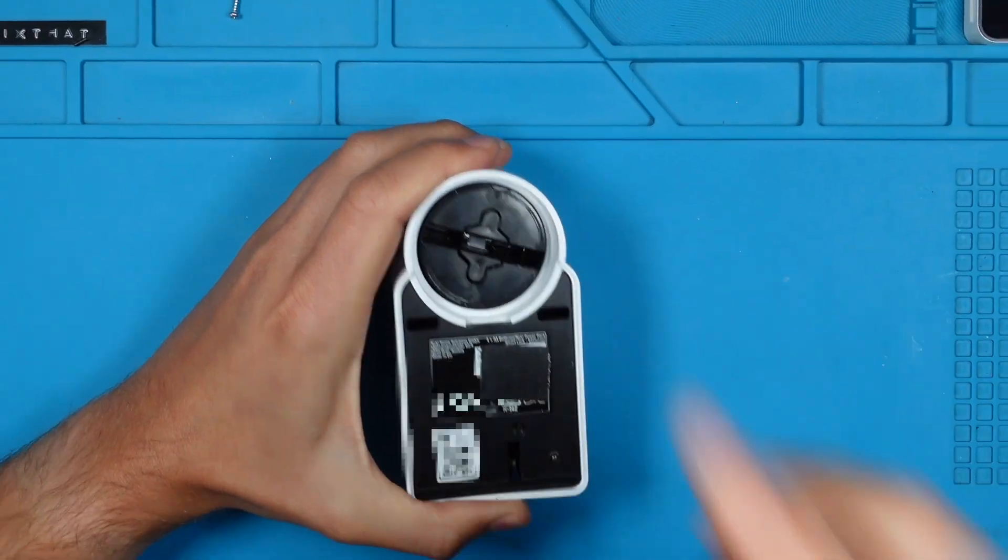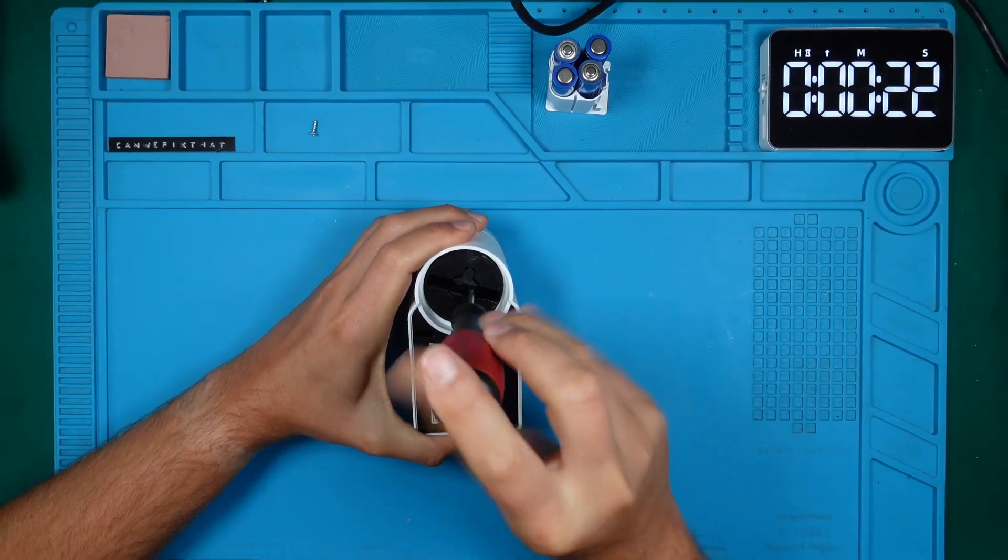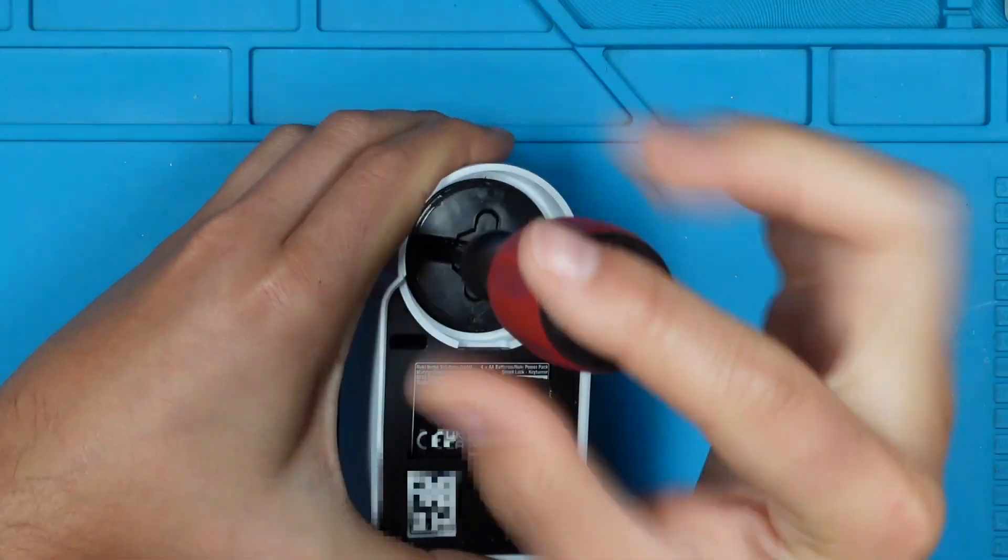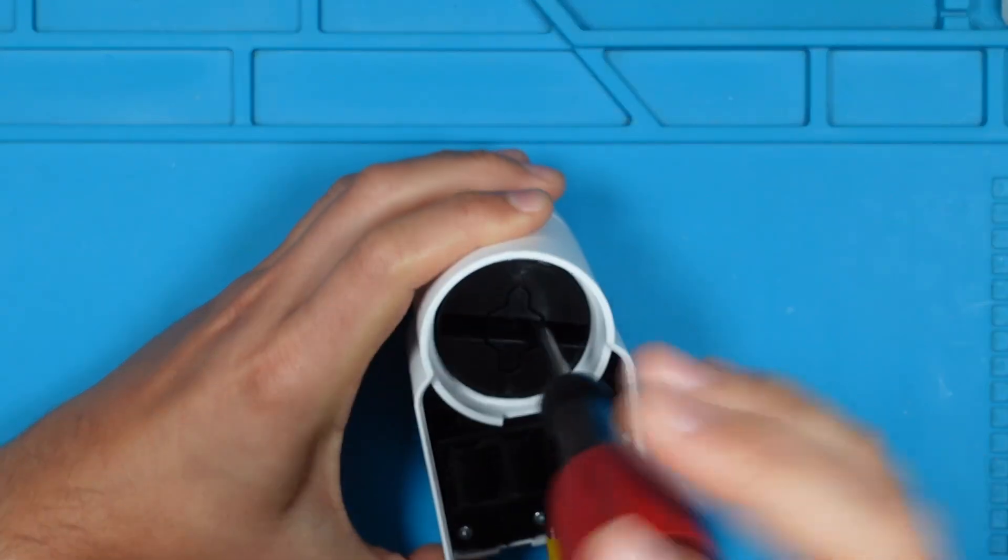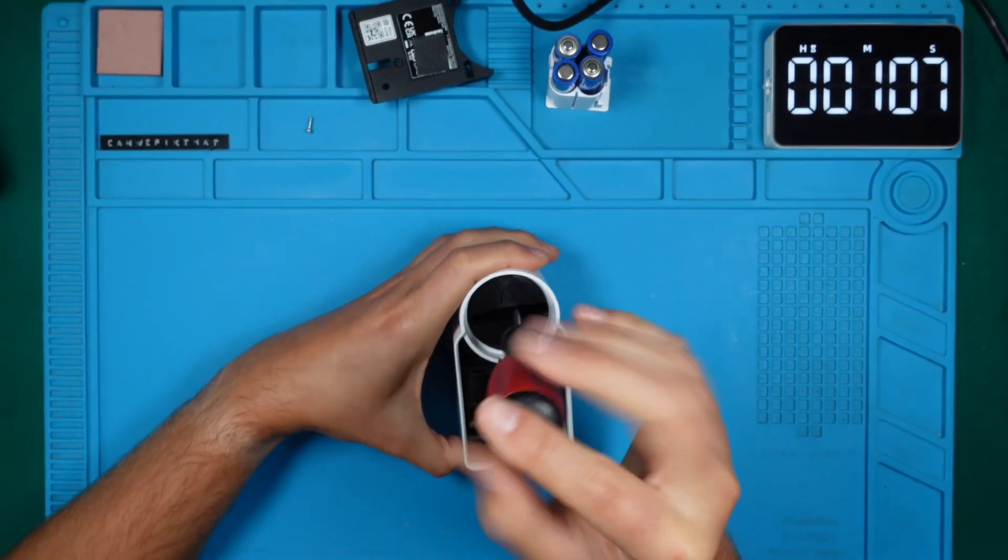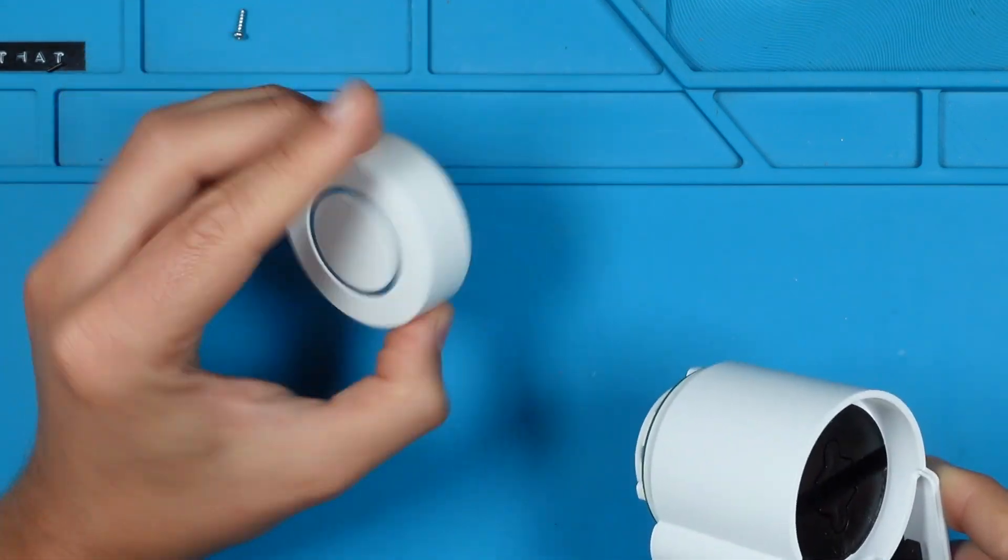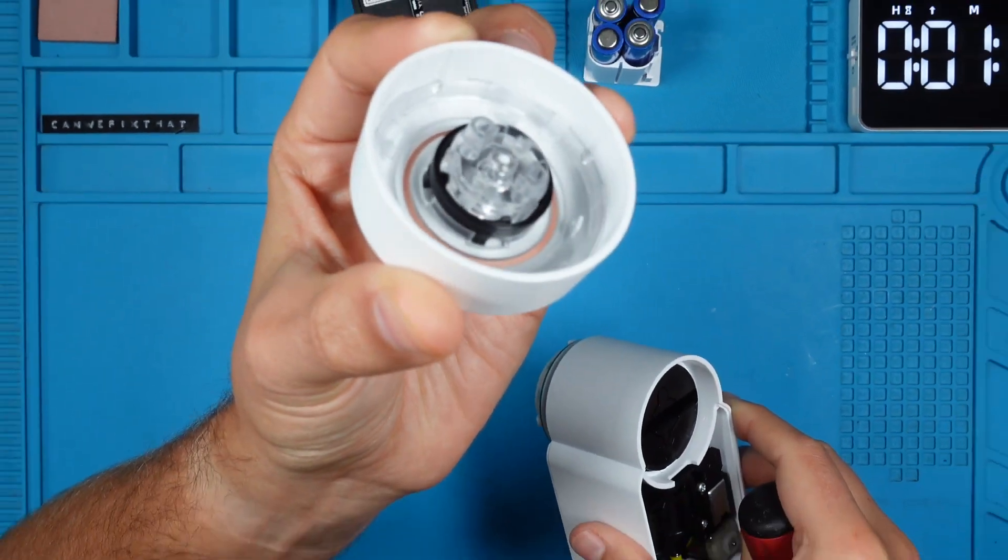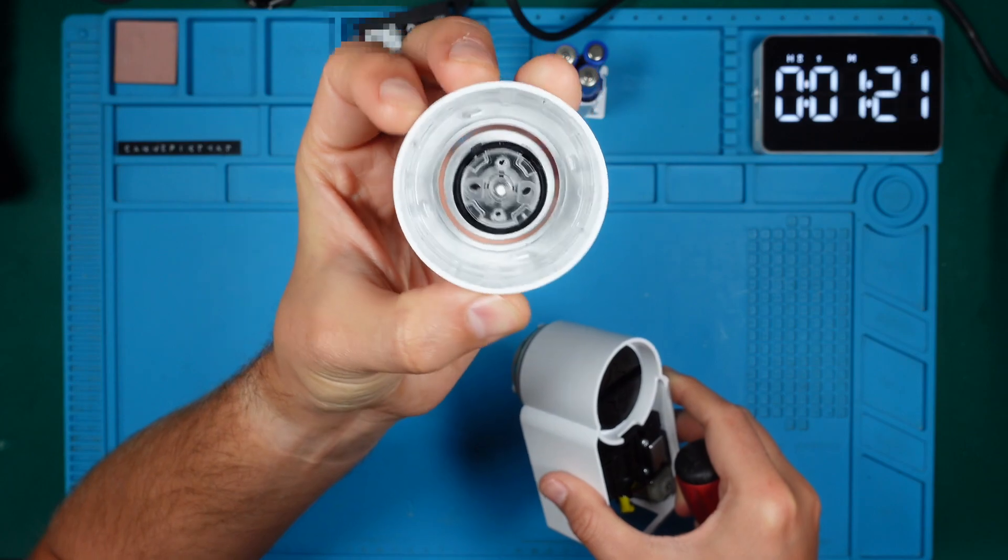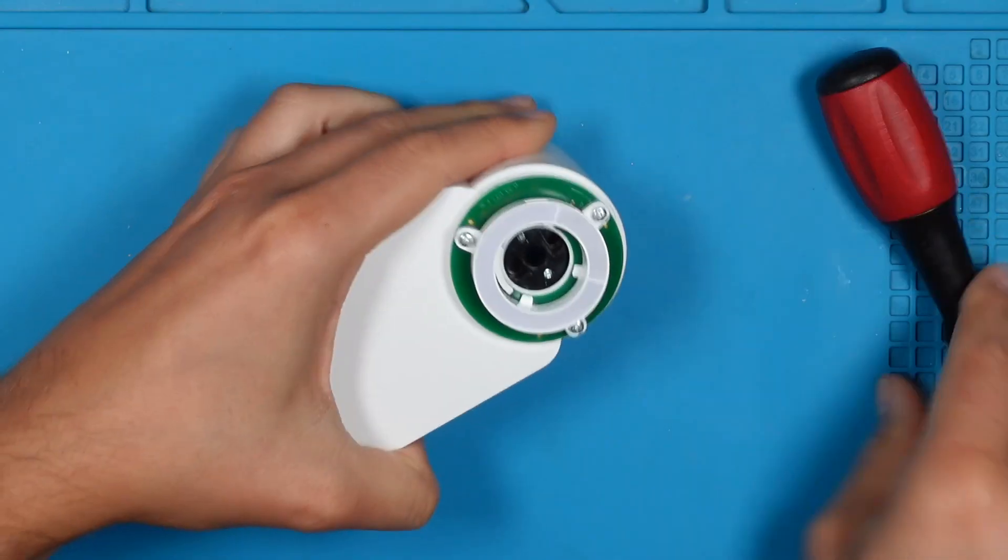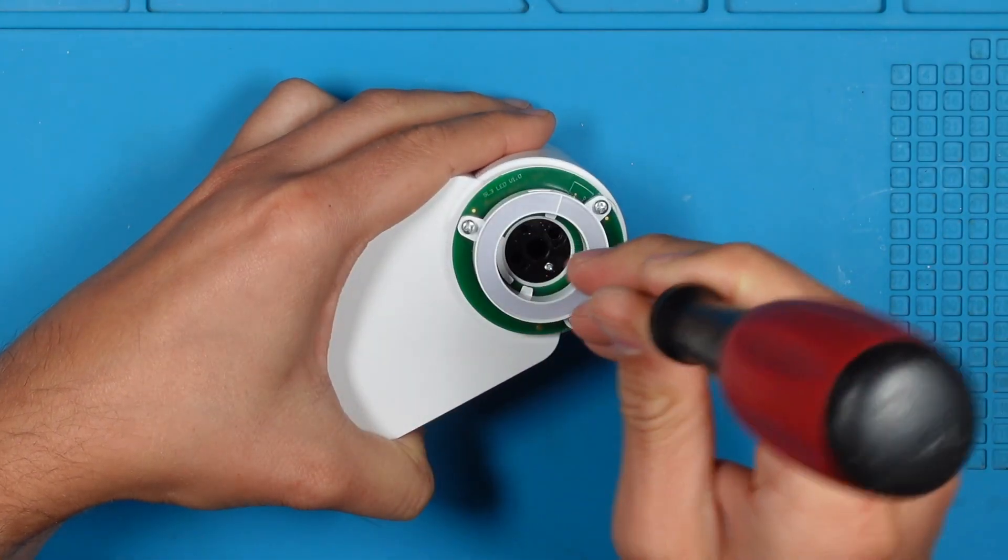Inside the key slot we can see two more screws. Let's remove them also. Afterward, we can remove the front part of the knob. There are no electronics inside this part.